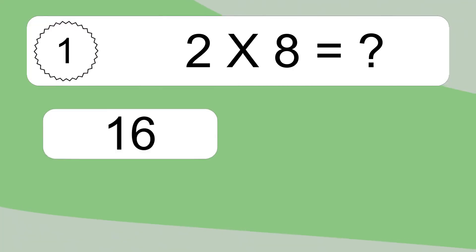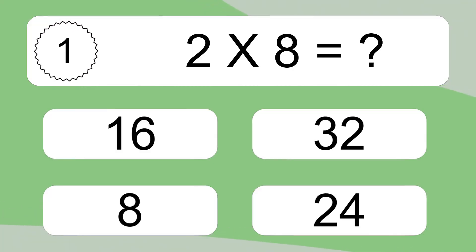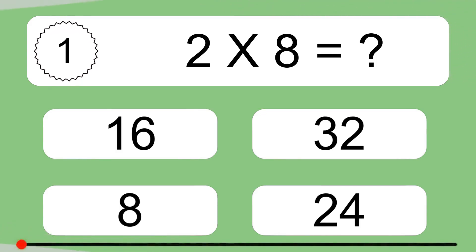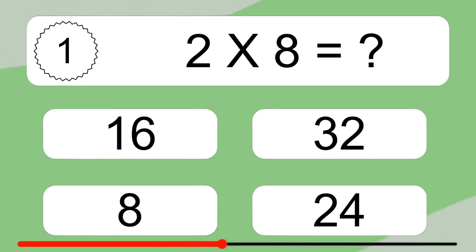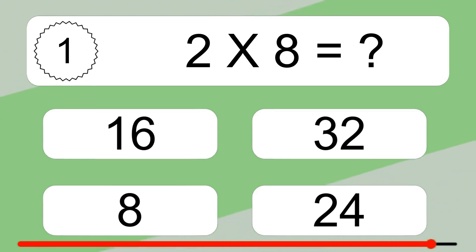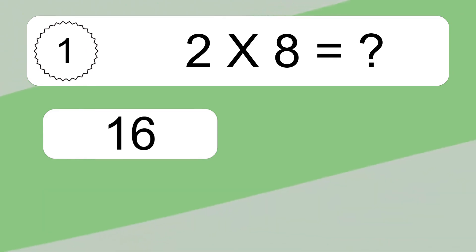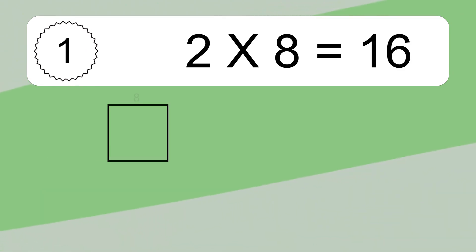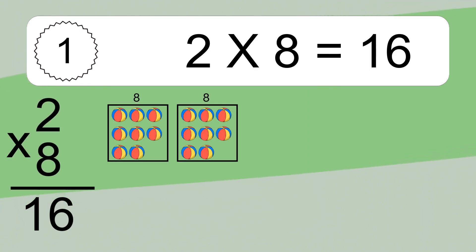2 times 8 equals what? 2 times 8 equals 16.